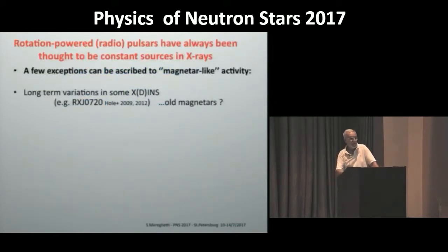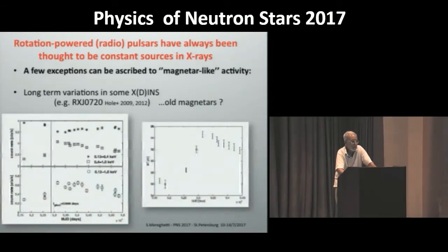Indeed, there have been discovered recently a few exceptions to this rule. Some isolated neutron stars showing X-ray flux variations. One example is this X-Din, in which you see here flux variation in the soft and in the hard X-ray flux. We believe that this kind of long-term variation are in some way related to some kind of magnetically powered activity. These kinds of objects are believed to be the descendants of magnetars.